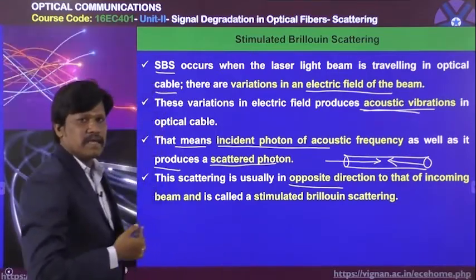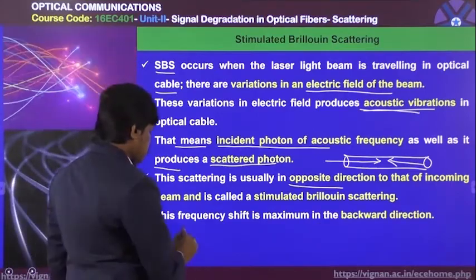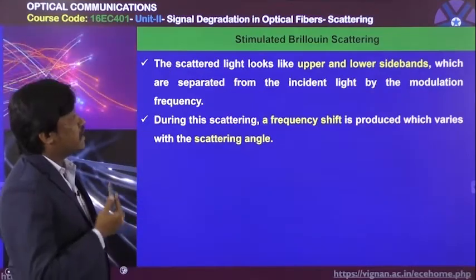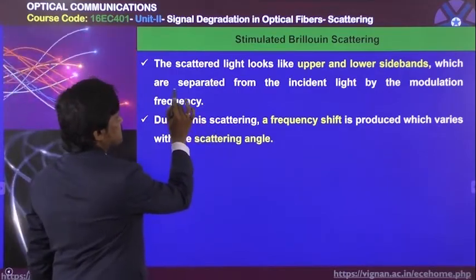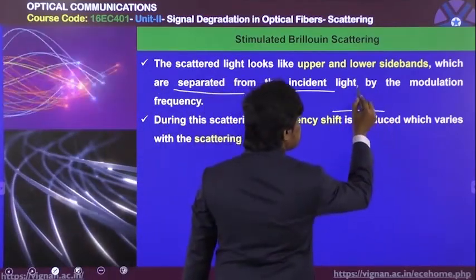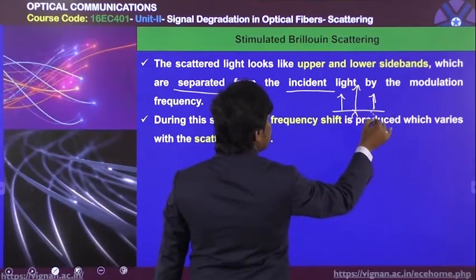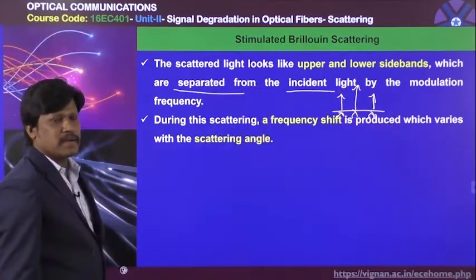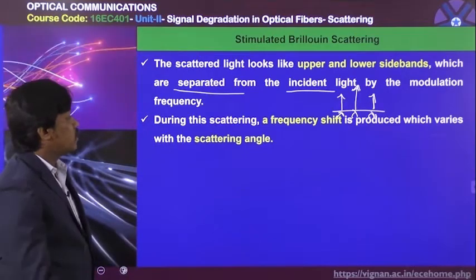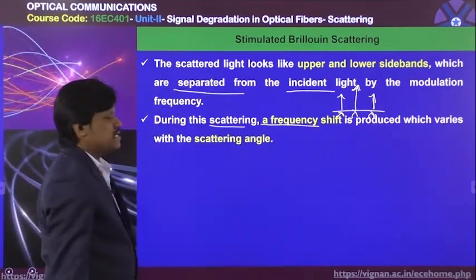Stimulated Brillouin scattering usually occurs in the opposite direction to the top of the incoming or incident beam. The frequency shift is maximum in the backward direction. The scattered light looks like upper and lower sidebands, which are separated from the incident light by the modulation frequency. During the scattering, a frequency shift is produced which varies with the scattered angle.